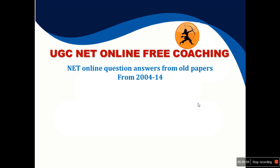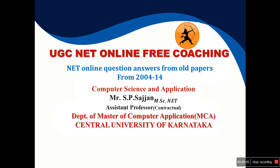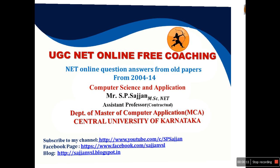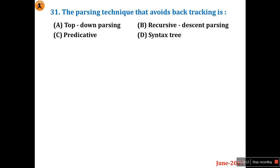Welcome to USESNET online pre-coaching. Today I'll discuss the fourth part of the June 2007 series, specifically question number 31. The parsing technique that avoids backtracking — is it top-down parsing, predictive recursive descent parsing, or predictive parsing? These are the four options given.